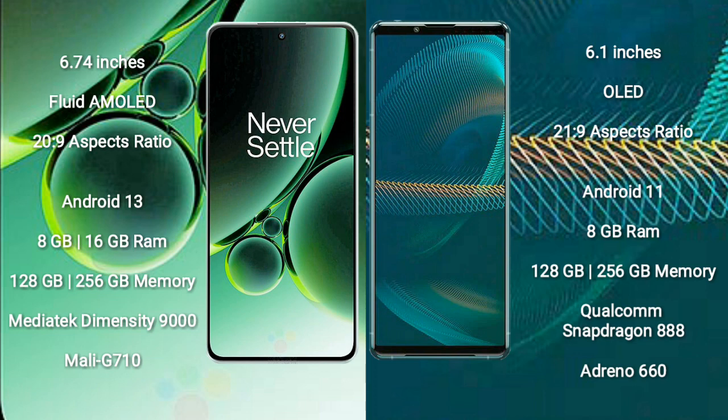OnePlus Nord 3 comes with 8GB or 16GB RAM and 128GB or 256GB internal storage, with a MediaTek Dimensity 9000 processor and Mali-G710 GPU.